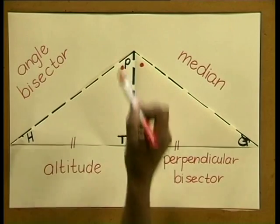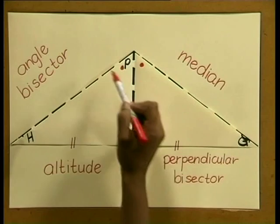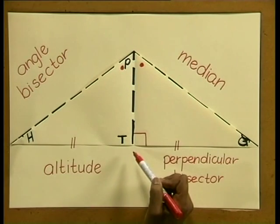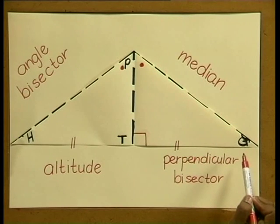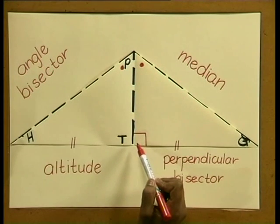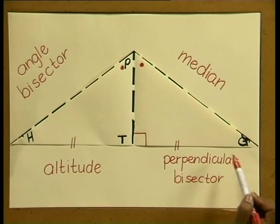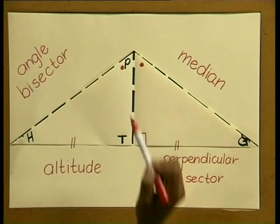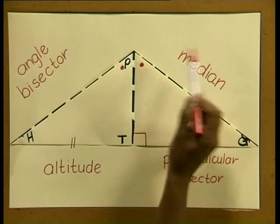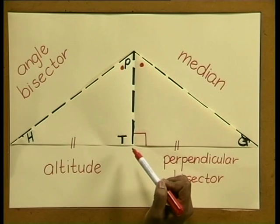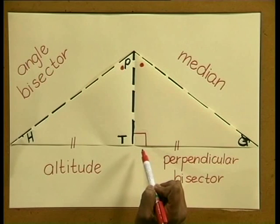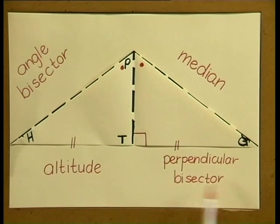The line of symmetry in the isosceles triangle does some very special things. The symmetry line PT bisects angle HPG into two equal parts — we can say that PT is an angle bisector. PT also cuts the line segment HG into two equal lengths, so we say that the symmetry line PT bisects the side HG. Can you remember from lesson two what we call a line that passes through the vertex and bisects the opposite side? Yes, it is a median. So PT is a median in this triangle. PT also bisects HG at a 90 degree angle, or perpendicularly — we say that PT is a perpendicular bisector.